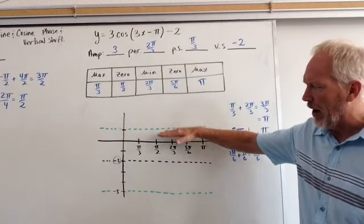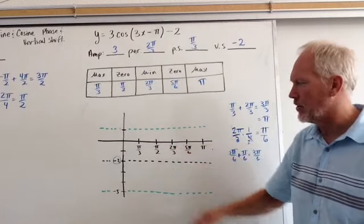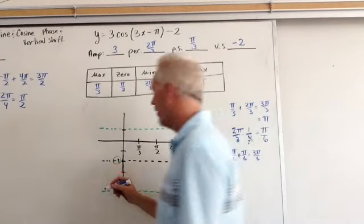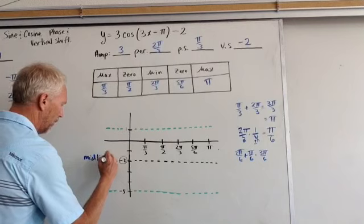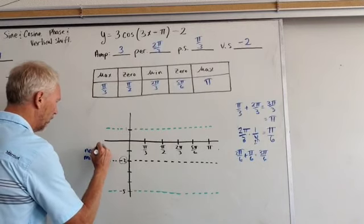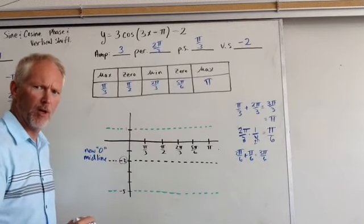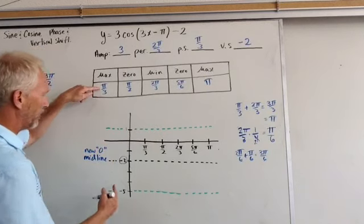Remember, this graph is shifted down 2 units. So here's my new midline right here. This is the midline, or the new 0 in quotation marks. So now I plot my points.